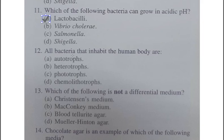Question number twelve: All bacteria that inhabit the human body are — A: autotrophs, B: heterotrophs, C: phototrophs, D: chemolithotrophs. The correct option is B, heterotrophs.